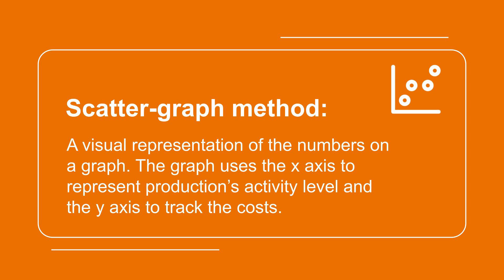The next method is the scatter graph method. This method is easy for a reader to analyze because it is a visual representation of the numbers on a graph. The graph uses the x-axis to represent what the company produces and the y-axis to track the cost. After we mark the points on the graph, a line is drawn through the points that best fits the relationship between the variables.